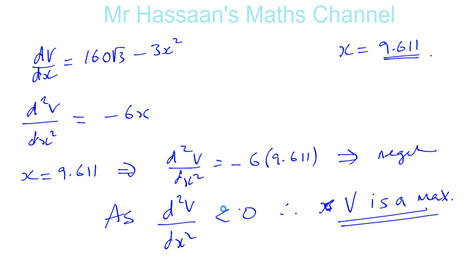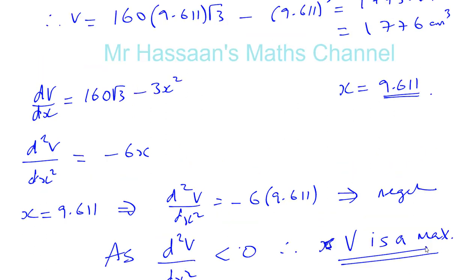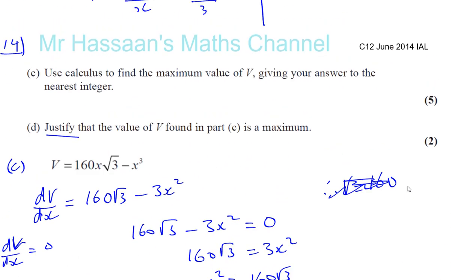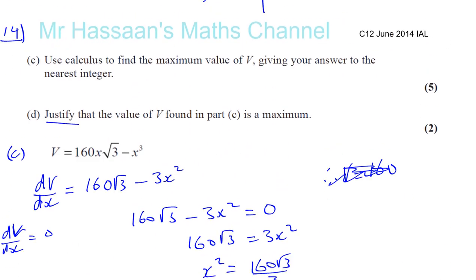Okay, if the second differential for the value of X you found is negative, it's a maximum. If it's positive, it's a minimum. So we've justified it's a maximum using that. Okay, so that's how you deal with part C and D of that question. Okay, thank you for watching.